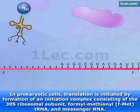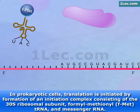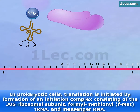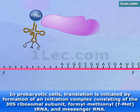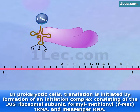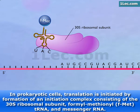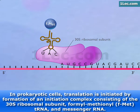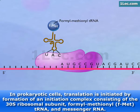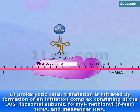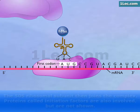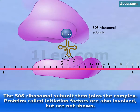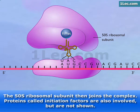In prokaryotic cells, translation is initiated by formation of an initiation complex consisting of the 30S ribosomal subunit, formyl methionyl tRNA, and messenger RNA. The 50S ribosomal subunit then joins the complex.